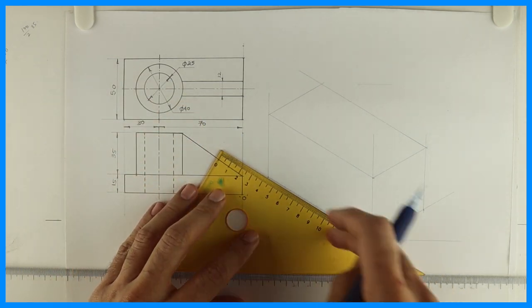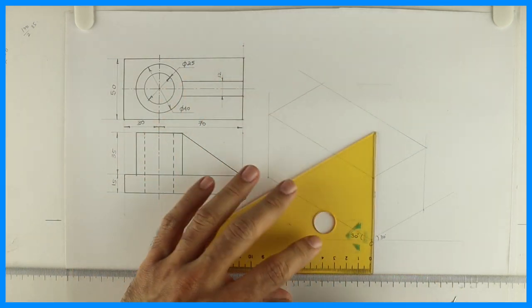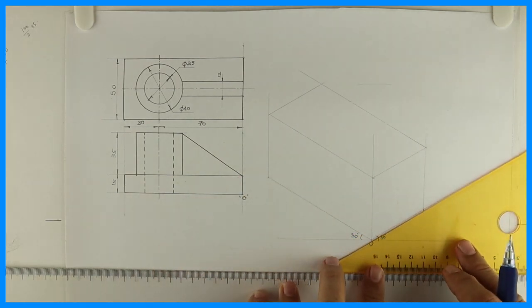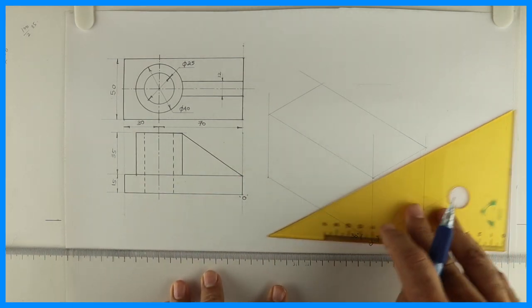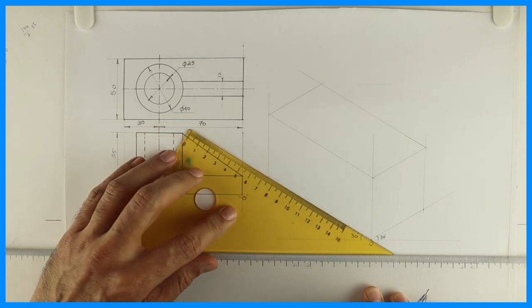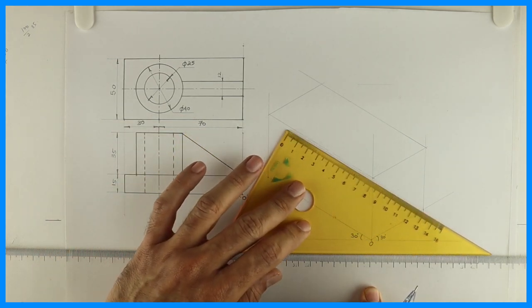So first we will take set square, we will draw it like this. We'll draw the required box. Now remember one thing, in isometric box is very important and you have to retain the box.